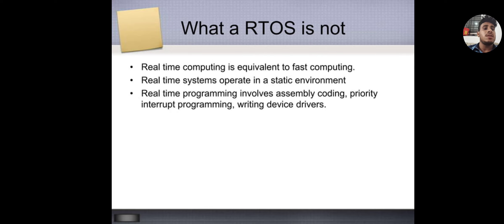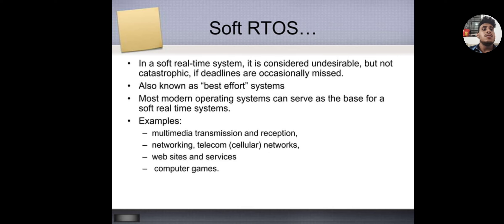Soft RTOS: In a soft real-time system, it is considered undesirable but not catastrophic if deadlines are occasionally missed. Also known as a best effort system. Most operating systems can serve as the base for soft real-time systems. For example, multimedia transmission and reception, networking telecom cellular networks, websites and services, and computer games.